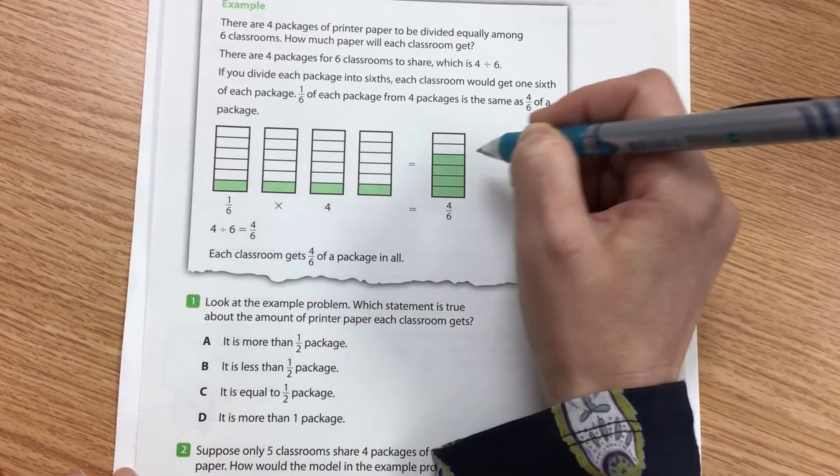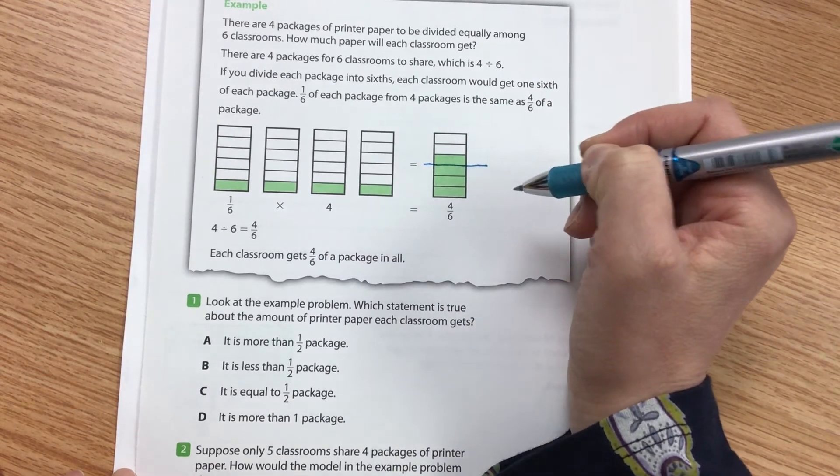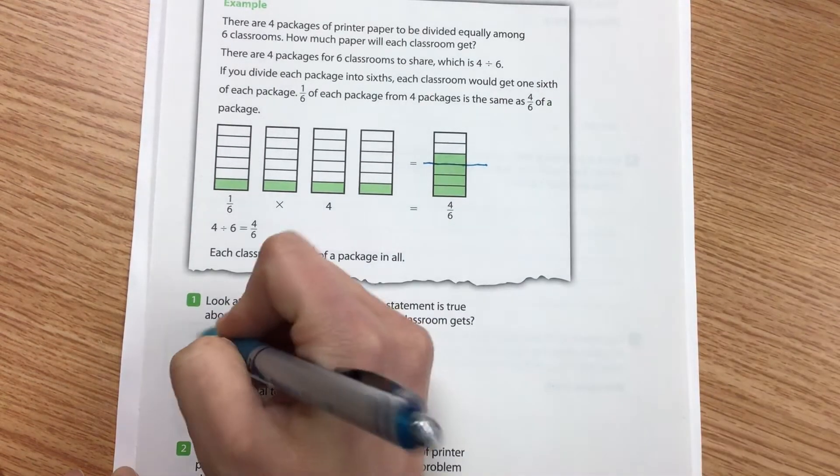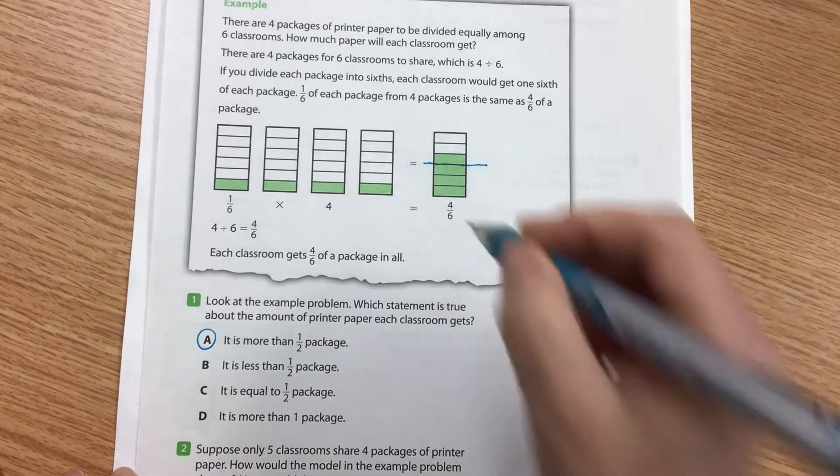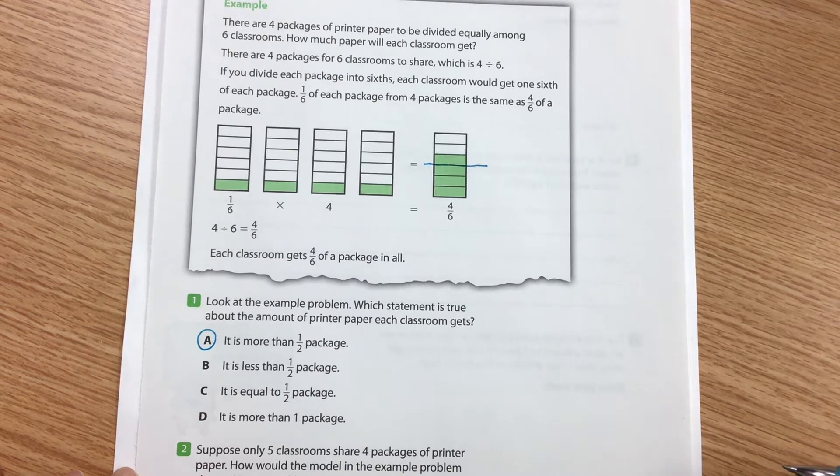Alright, so just glancing over here, I know that this right here is half. So it's a little bit more than half a package because I know that half of six is three. So it's a little bit more than half a package.